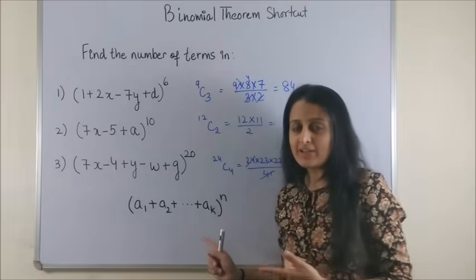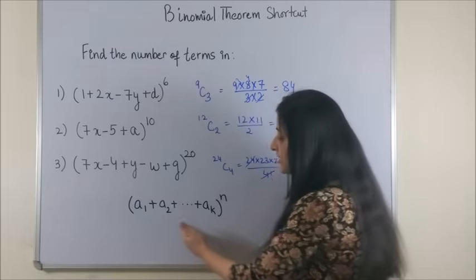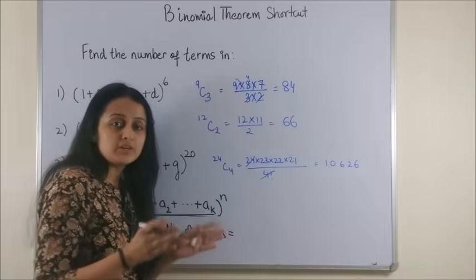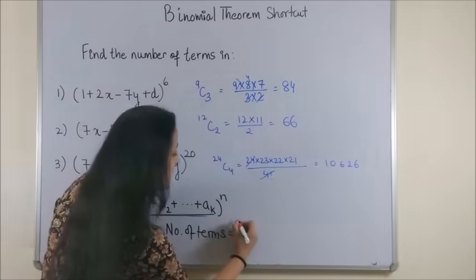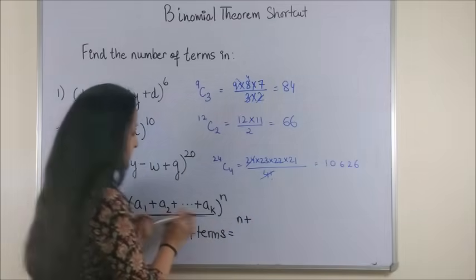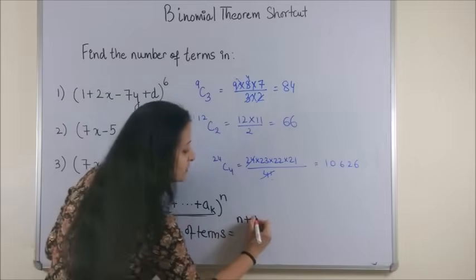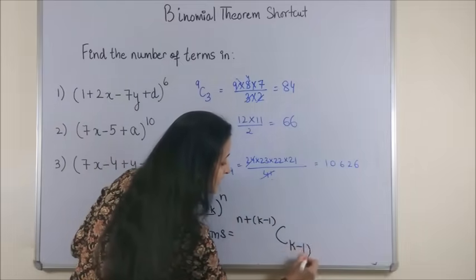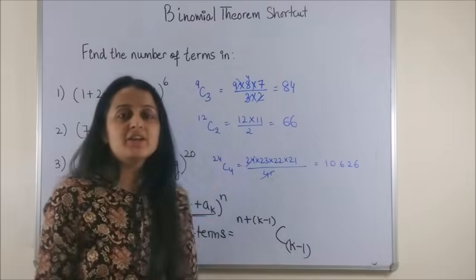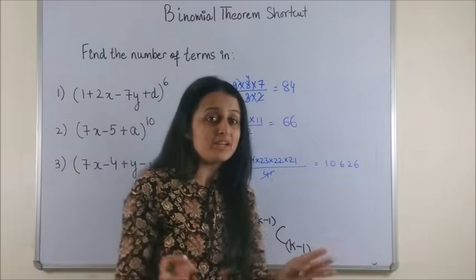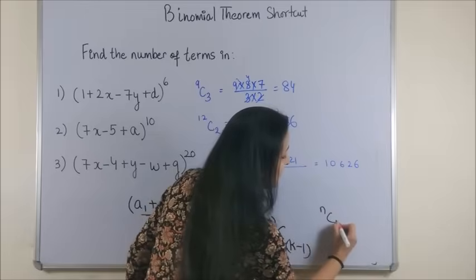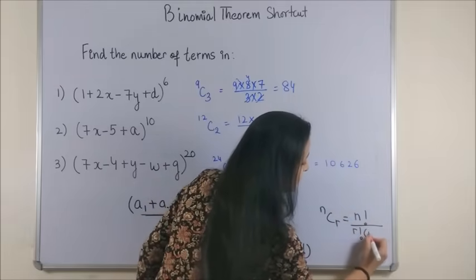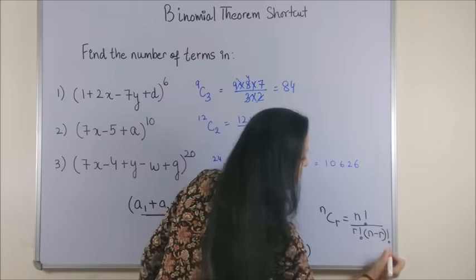Please have a look at this formula. Suppose we are given k number of terms to the power n. So number of terms in this case would be n plus if there are k terms here, so k minus 1, C k minus 1. That's it. That means we are using the combination formula which was nCr is equal to n factorial upon r factorial into n minus r whole factorial.